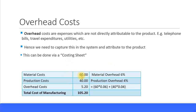We can directly capture material costs and production costs in the system. For overhead costs, this can be done via something called a costing sheet, which we will look at later. For example, if we have a 6% overhead cost rate for materials and 4% for production, and our material cost is $60 and production cost is $40, then overhead is 60 × 6% = $3.60 plus 40 × 4% = $1.60, giving $5.20 in overhead. So our total cost of manufacturing — material cost plus production cost plus overhead cost — comes to $105.20.